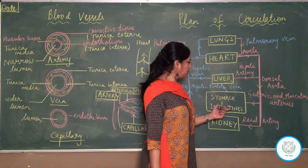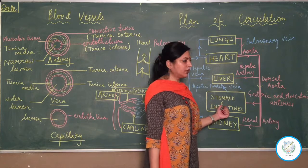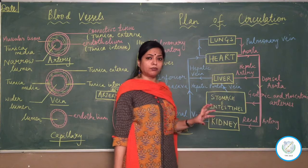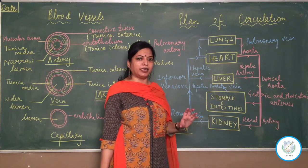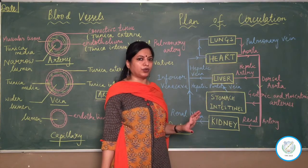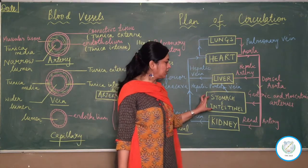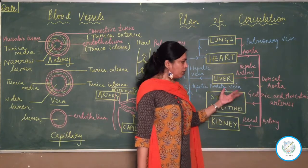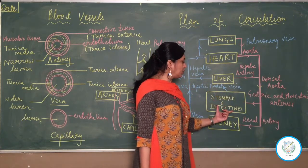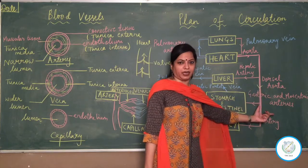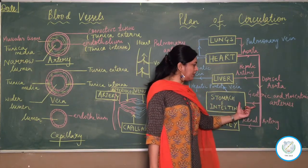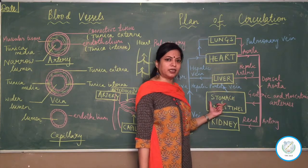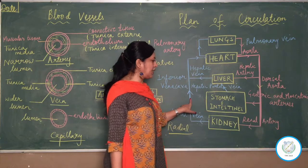Next, we talk about the stomach and intestine. The stomach and intestine are supplied blood through a common celiac artery, but details are not in your course. The artery which supplies oxygenated blood mainly to the stomach is the gastric artery, originating from the common celiac artery, and to the intestines is the mesenteric artery. So gastric and mesenteric arteries supply oxygenated blood to the stomach and intestine.